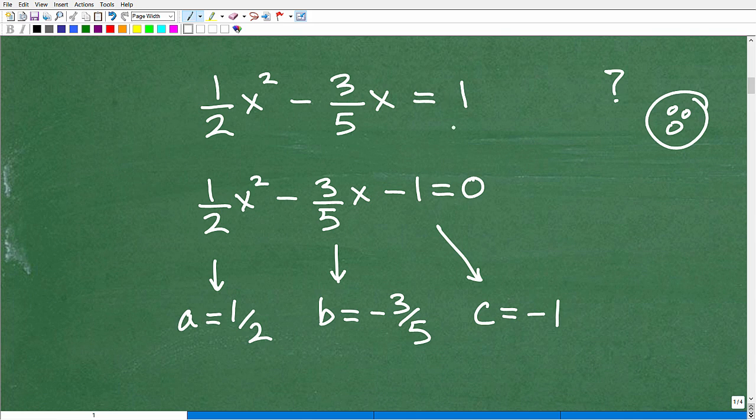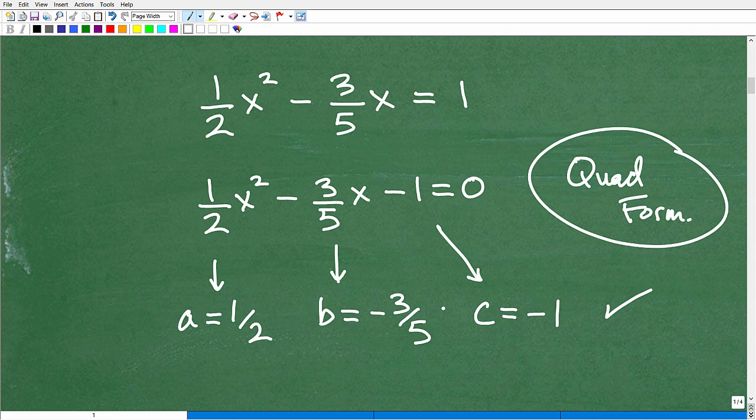And a lot of students will initially know to set this equal to zero. Now, by the way, if you don't know how to solve quadratic equations, then I have plenty of videos on this in my algebra playlist. But what you're going to do is you want to set this equal to zero. So we're going to move this one over to the left-hand side, and now we've got this set equal to zero. It's in standard form. And a lot of students will be like, okay, now this doesn't appear I can factor this, so I need to use the quadratic formula. And that is correct. That's good thinking. So they're going to say, okay, my A is one half, my B is negative three fifths, and C is negative one. This is all correct. This thinking, I need to use a quadratic formula, and my ABC values here is all correct. However, this is not the way you want to start this problem.